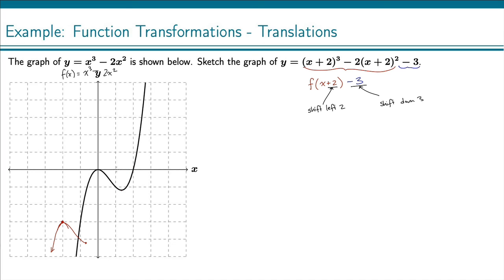And I can move that left 2: 1, 2, and then down: 1, 2, 3. And go ahead and graph that as well. So that's the sketch, then, of my curve that's been shifted left 2 units and down 3 units.